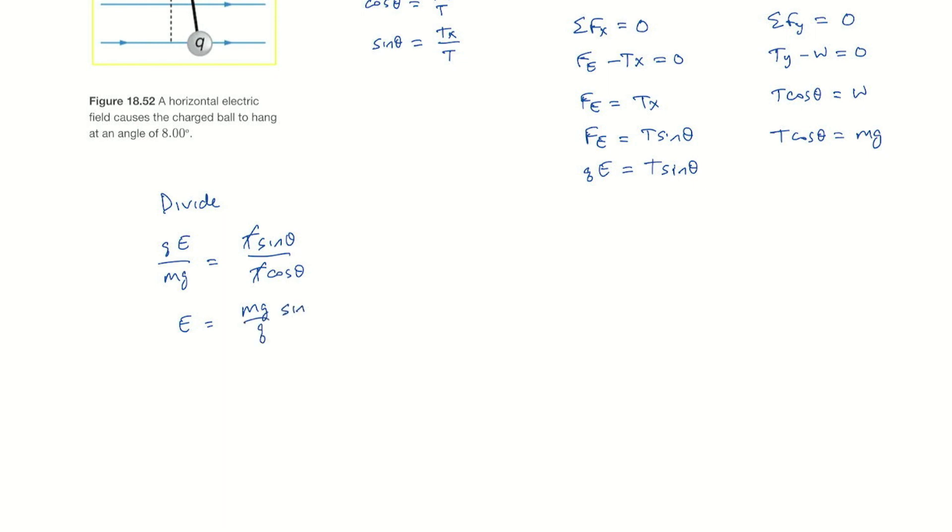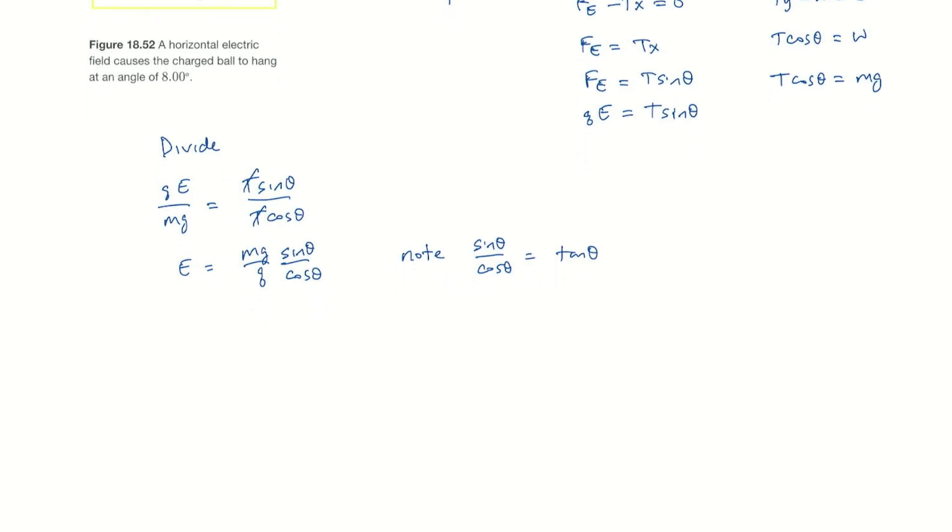We've got a sine theta over a cosine theta. But let's note that sine theta over cosine theta is equal to the tangent of theta. So we have e is mg tan theta over q.